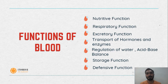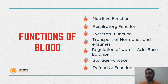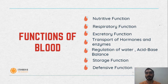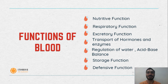Now talking about the functions of blood. Nutritive function: all the nutritive substances like glucose, amino acids, lipids, and various other vitamins derived from digested food are absorbed by the gastrointestinal tract. These substances then enter into the blood, and blood transports them to various cells of our body, ultimately helping in the production of energy and growth. Respiratory function: the oxygen we inhale enters into the alveoli, from where it enters into the blood, and blood then transports this oxygen to various cells and tissues of the body.